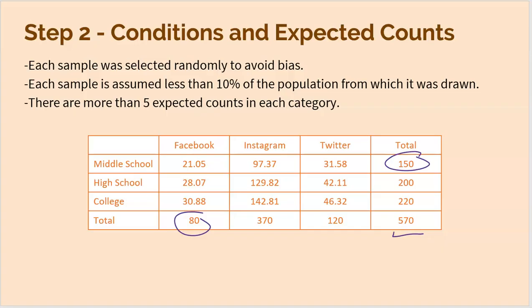It's important to understand where these expected numbers come from — they are built assuming the null is true. For example, 80 out of 570 is about 14% of people in the survey who use Facebook. If there is no difference in distribution, then 14% of middle schoolers should use Facebook — that's 150 × 14% ≈ 21. Similarly, 14% of the 200 high schoolers ≈ 28, and 14% of the 220 college students ≈ 30.8. The proportions, not the raw numbers, must be the same. The formula — row total times column total divided by grand total — gives you this.